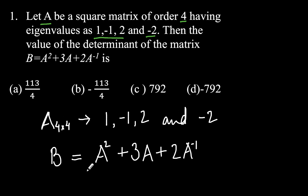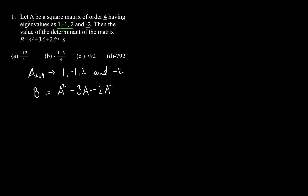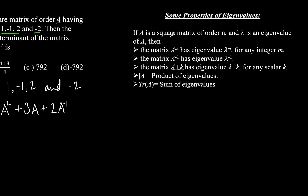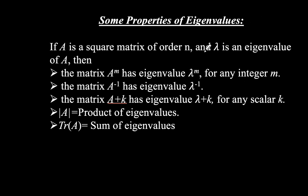Before attempting this question, let me recall some properties of eigenvalues. If A is a square matrix of order n and λ is an eigenvalue of A, then: A^m has eigenvalue λ^m; A⁻¹ has eigenvalue 1/λ; and (A + kI), where k is any scalar, has eigenvalue λ + k.